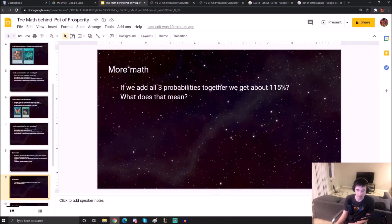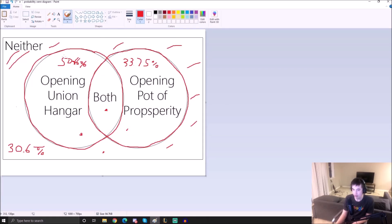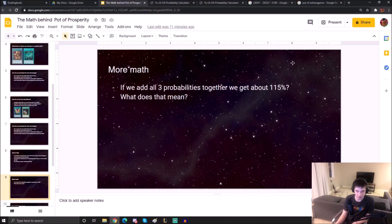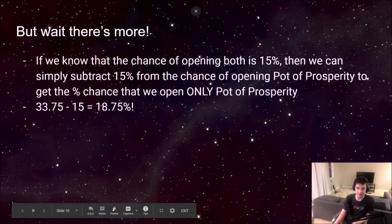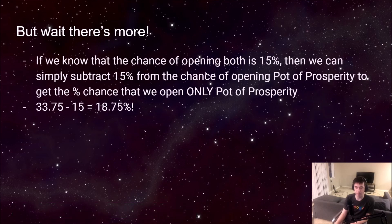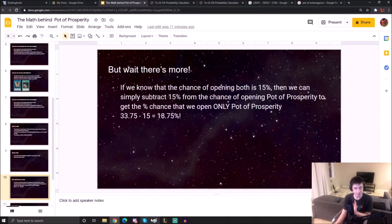Let's look again really closely at our image here, because I guarantee you we didn't do the math wrong. Notice how when we counted the Union Hangar hands, we counted everything in here. But notice how when we counted the Pot of Prosperity hands, we also counted the both section. So notice how we double counted this middle section here. What does that tell us? That tells us actually that this extra 15% above 100, that tells us that this is actually the probability that we open both Pot of Prosperity and Union Hangar.